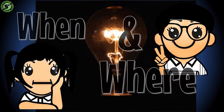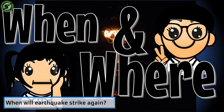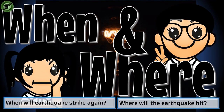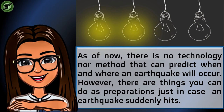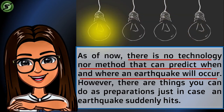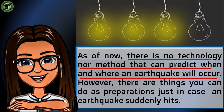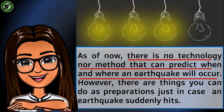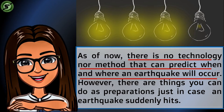When will an earthquake strike again, and where will it hit? Knowing where and when the next earthquake will occur is still impossible with our current technology. There is no formula or equation that can tell the time and place of future earthquakes. Even with how advanced science is today, no instrument has been invented that can predict where and when the next earthquake will strike. Thus, the only thing we can do is to get ready.